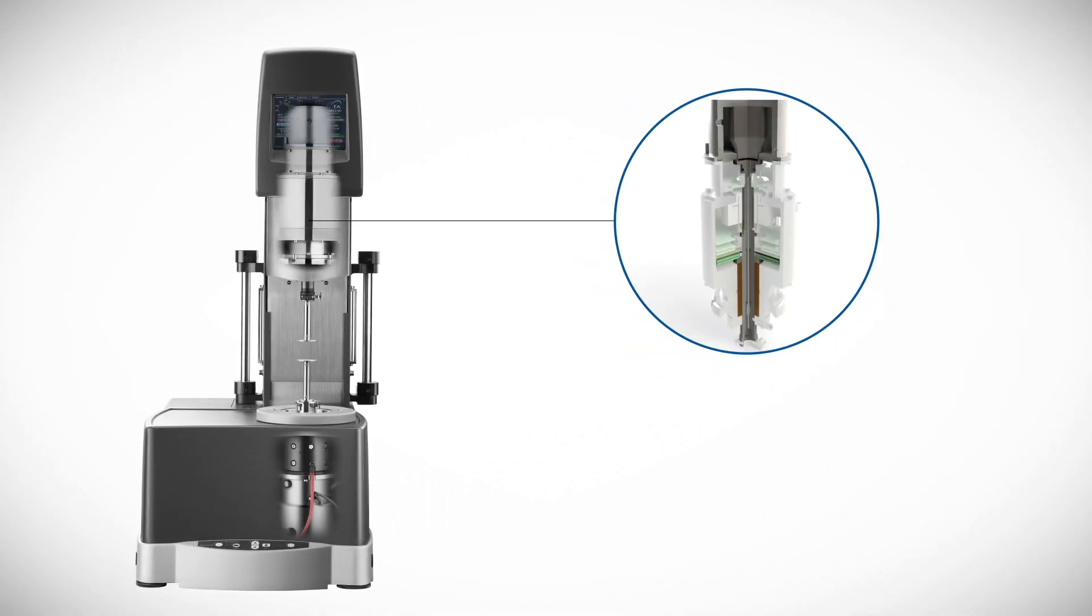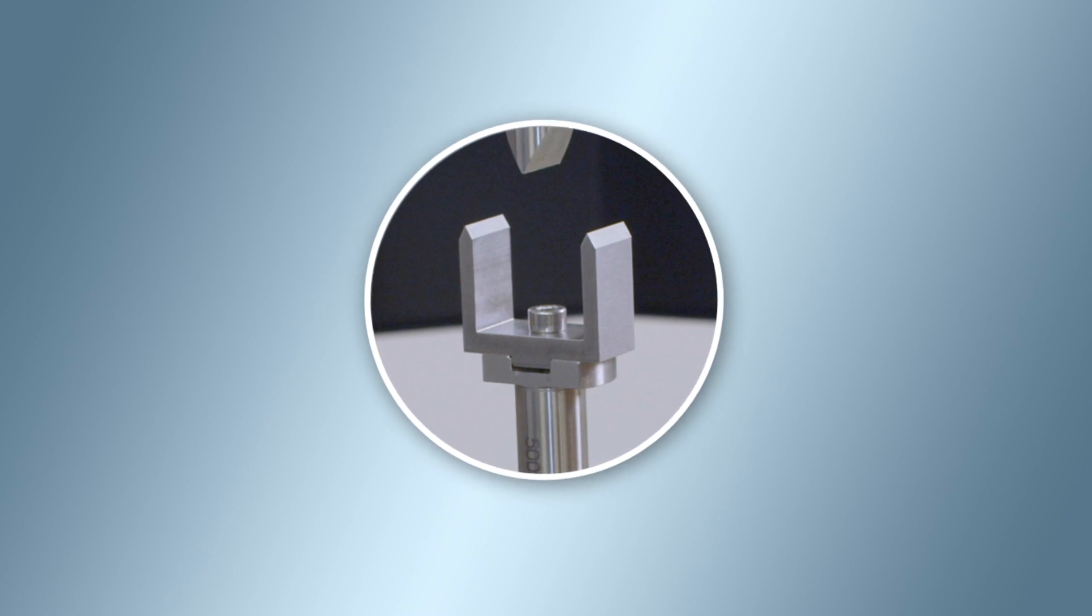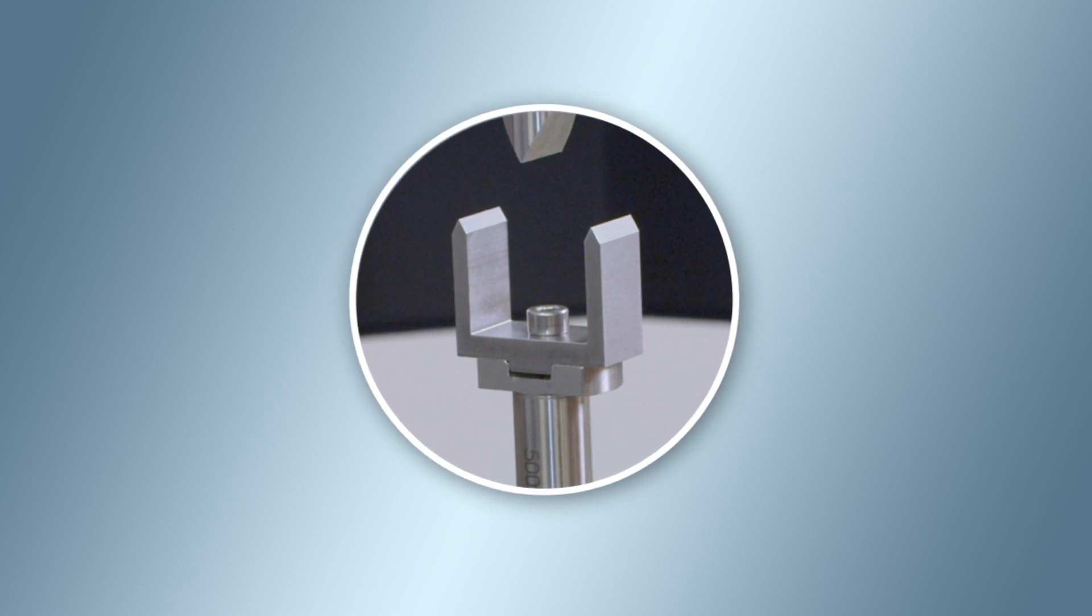Using the force rebalance transducer, the ARES-G2 is a rotational rheometer capable of performing linear dynamic mechanical analysis. The three-point bending clamp can be used to study viscoelastic properties of a solid rectangular specimen in bending mode.